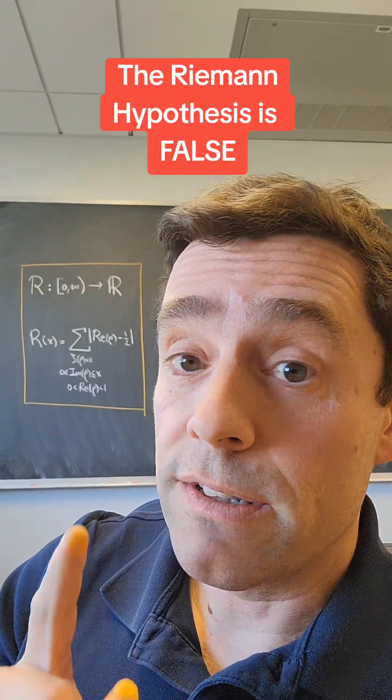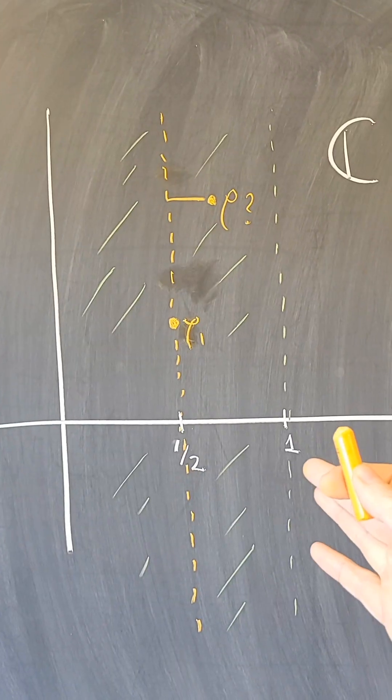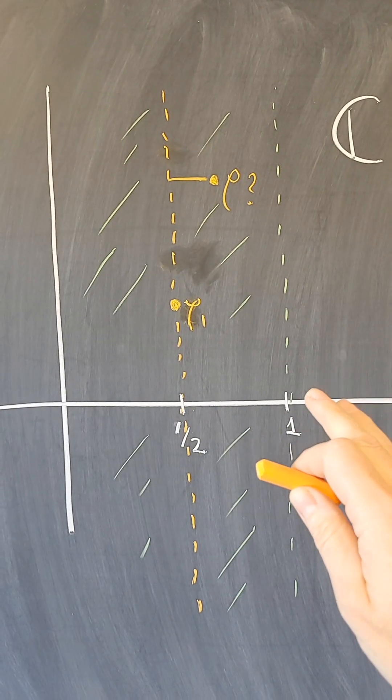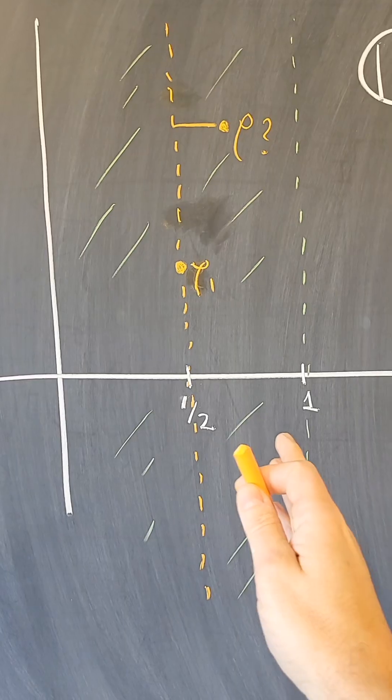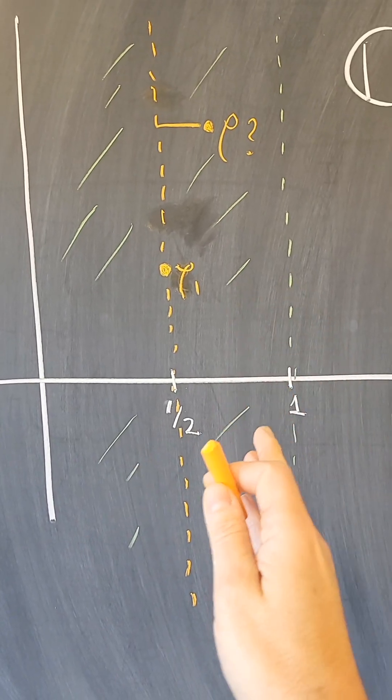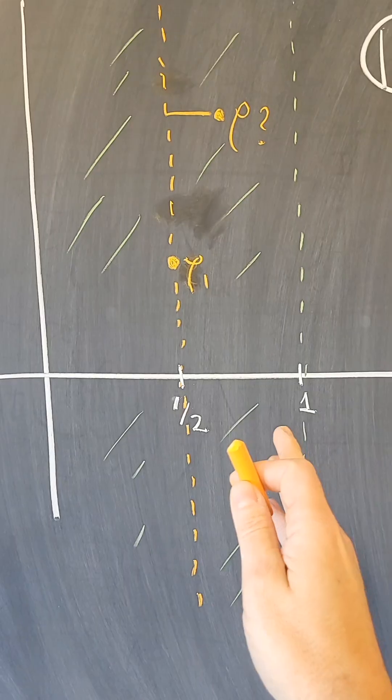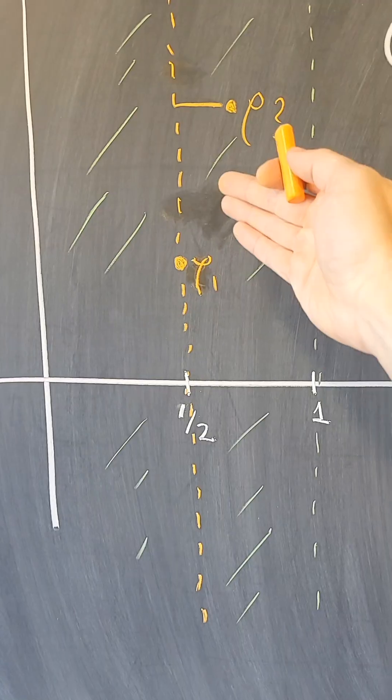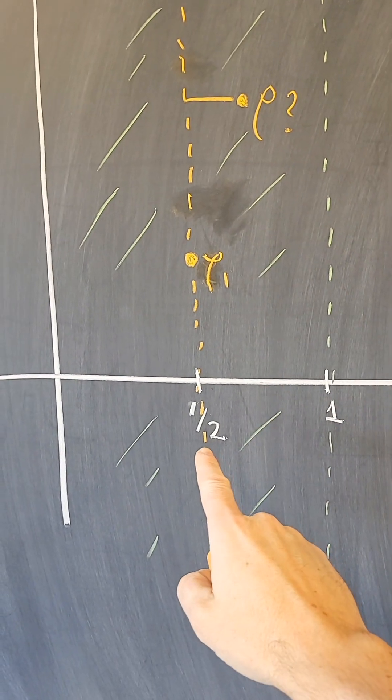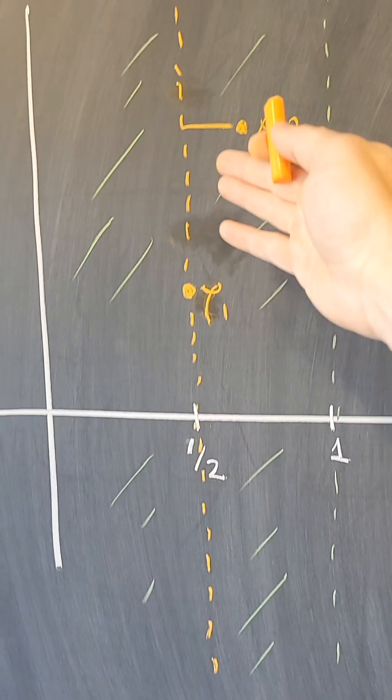And here is the disproof. As a reminder, the Riemann Hypothesis says that in the Riemann zeta function, the zeros that are in what we call the critical strip, those complex numbers with real part between zero and one, the conjecture says that all the zeros are actually concentrated on the line with real part equals one-half, that all the zeros are in here.